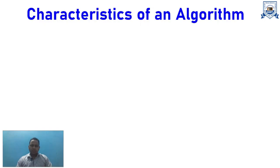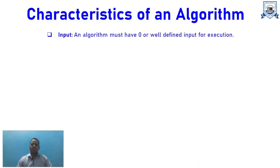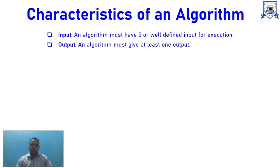The characteristics of an algorithm are as follows. First, Input: an algorithm must have zero or well-defined input — it may take zero inputs if no user input is required, or it may take input in other cases. Second, Output: an algorithm must produce at least one output — it must print or return something as a result.